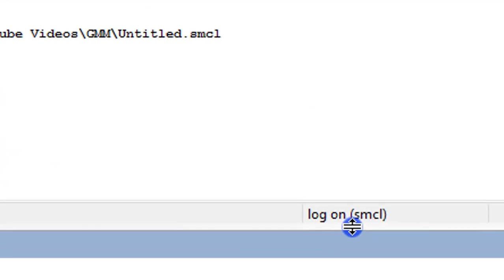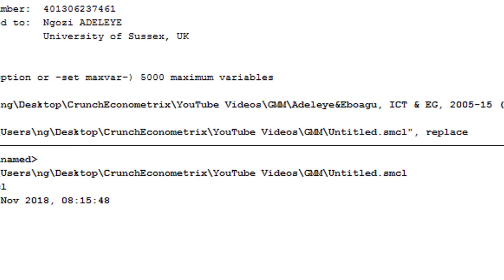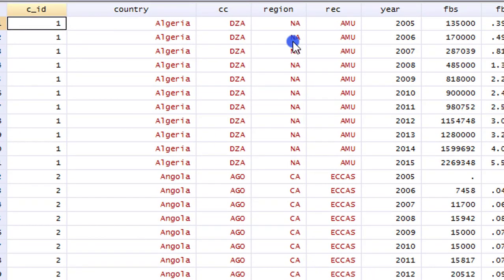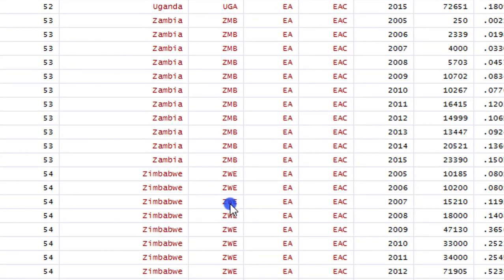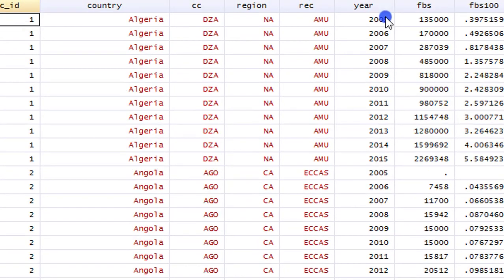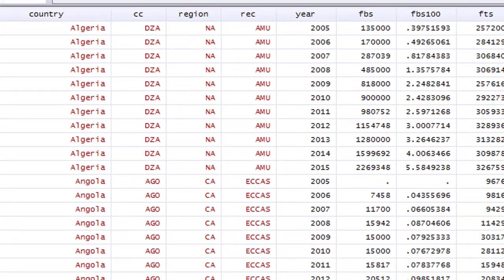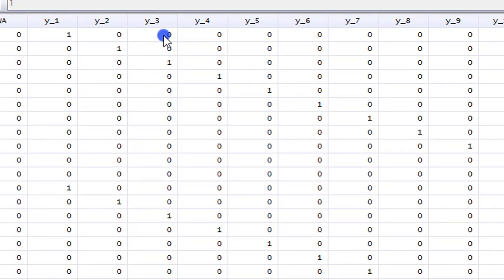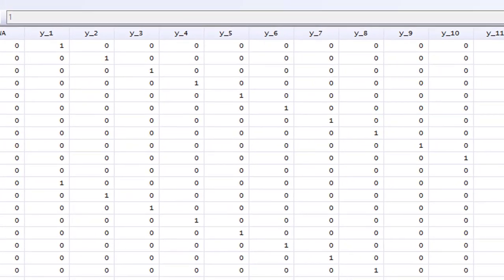So we are now in Stata. I have my log file on to track all estimations. Here is my data editor, still using the same panel data of 54 countries, Algeria being the first country, and Zimbabwe as the 54th country. Each country has 11 years observations from 2005 to 2015. And I've always emphasized that you generate year dummies. As you can see here, I have 11 year dummies.